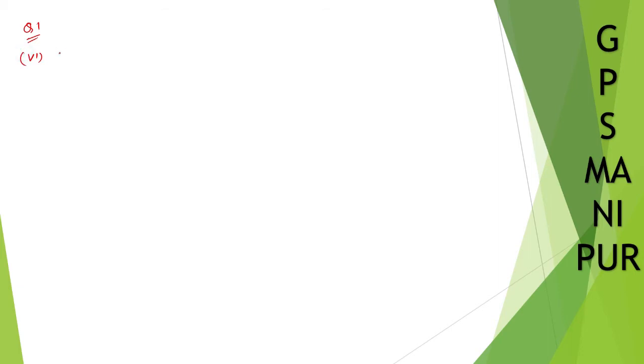Now we are doing question number one, exercise 4.1, roman number six. The question is: 13t minus 4(t + 8) minus 4 equals 0. The variable is t, so we need to find the value of t.